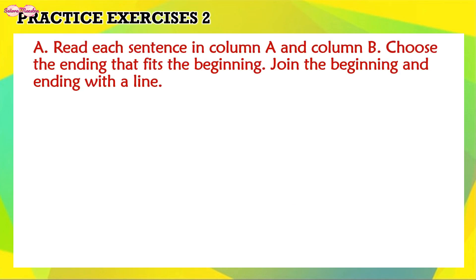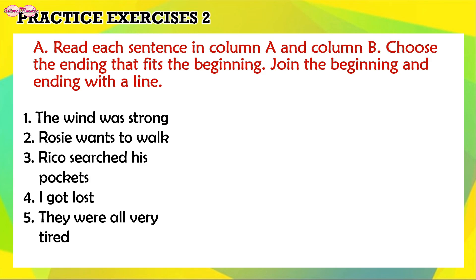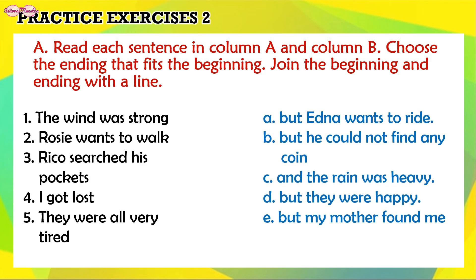Read each sentence in column A and column B. Choose the ending that fits the beginning. Join the beginning and ending with a line. 1. The wind was strong — C. And the rain was heavy.